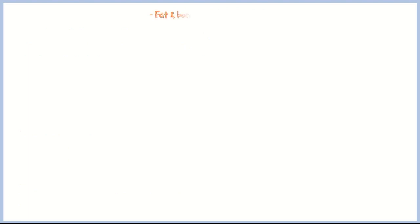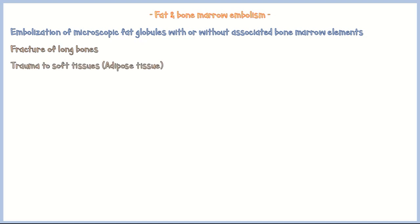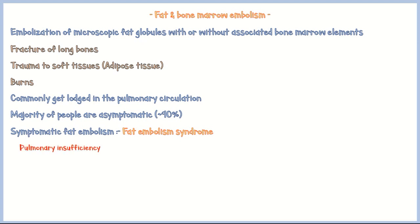Fat and bone marrow embolism refers to the embolization of microscopic fat globules, with or without associated bone marrow elements. It is commonly seen in fractures of long bones, trauma to soft tissues such as adipose tissue, and burns. These emboli commonly get lodged in the pulmonary circulation, but the majority of people with fat embolism are asymptomatic. Symptomatic fat embolism is called fat embolism syndrome, characterized by pulmonary insufficiency, neurologic symptoms such as delirium and coma, anemia, and thrombocytopenia.